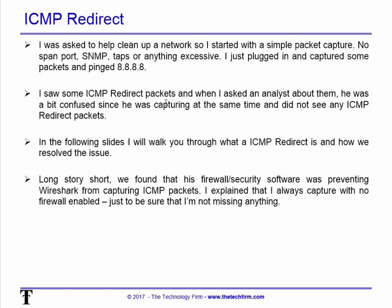I saw some ICMP redirect packets and asked the analyst I was working with what they were — he was confused because he was capturing at the same time and pinged the same address but didn't see any ICMP redirect packets. Long story short, he had a firewall or security endpoint loaded that was blocking all ICMP packets, so you couldn't even ping him. ICMP is also what messaging protocols use for errors like redirects. If you have firewalls loaded on your machine and are using Wireshark, consider disabling them while you capture packets, then turn them back on when you're done.